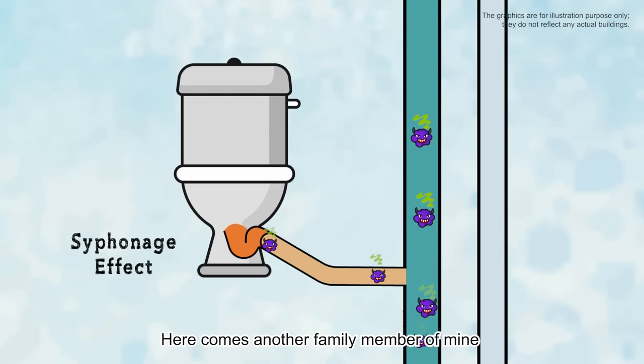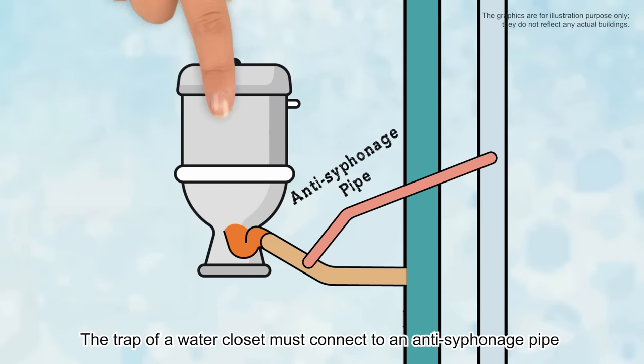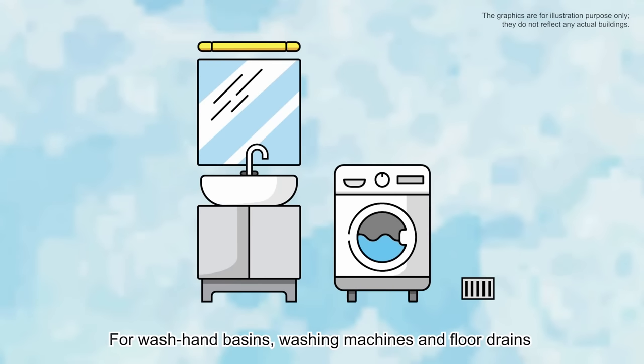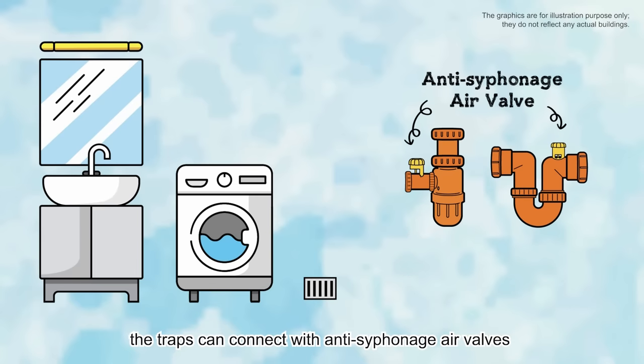Here comes another family member of mine, the anti-siphonage pipe, which connects to the trap. The trap of a water closet must connect to an anti-siphonage pipe. For wash-hand basins, washing machines and floor drains, the traps can connect with anti-siphonage air valves.